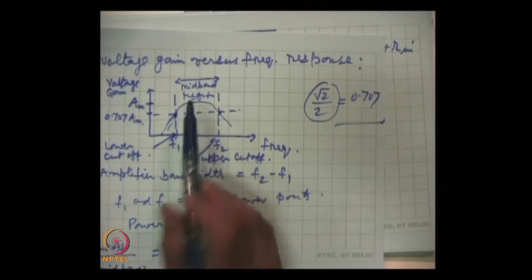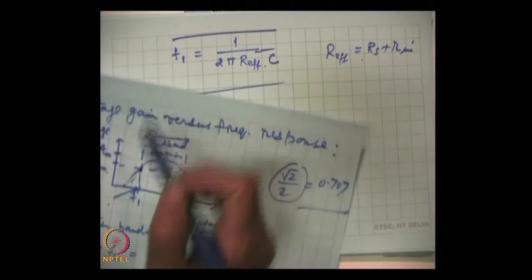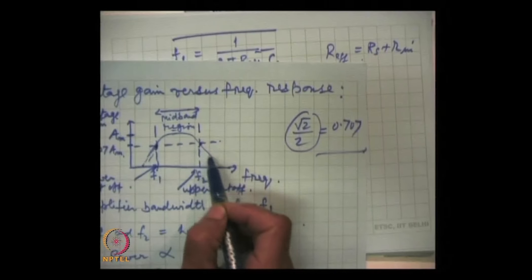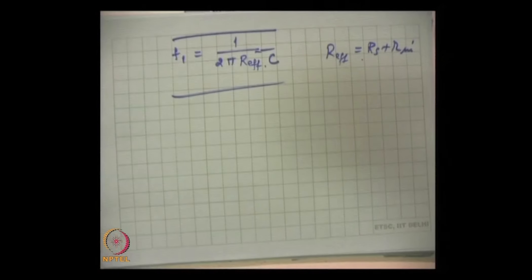As we increase the frequency, the capacitor becomes almost a short and has no effect — so why does the gain fall at high frequencies? The reason is junction capacitances associated with the transistor circuit. Remember: low-frequency cutoff comes from coupling capacitors, and high-frequency cutoff comes from junction capacitances. At this point we stop and will continue.